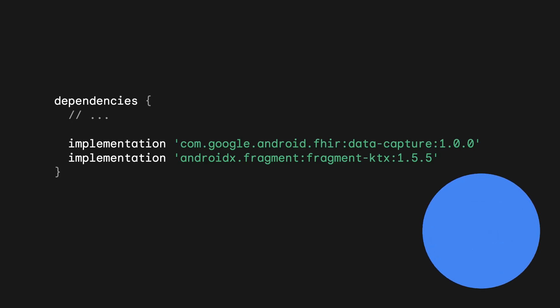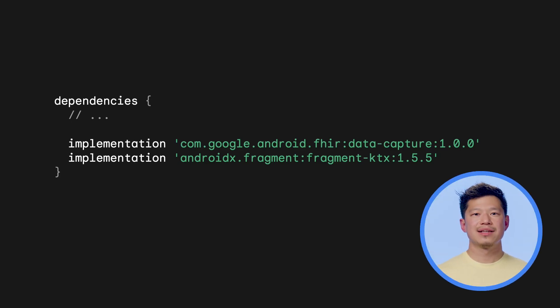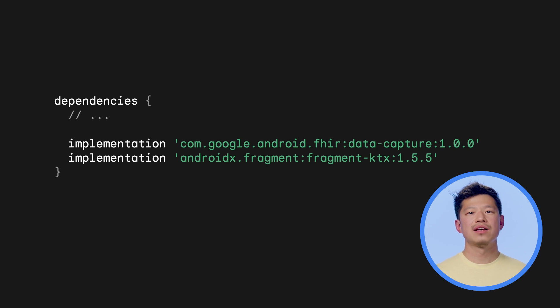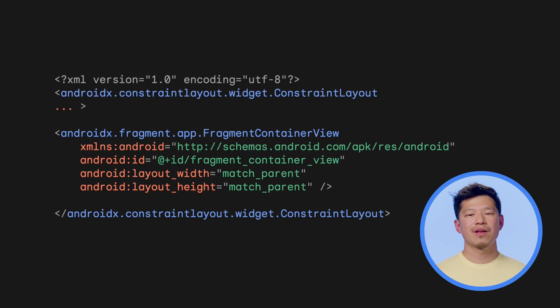Now it's time to take a look at how to use the SDC library. If you want to follow along in Android Studio, you can use the link below to download the zip file that includes the code of the sample app we're building here. First, include the SDC library dependency in your app's build file. After this, you can use the questionnaire fragment to display a form and capture answers. The questionnaire fragment is the main interface for your app to interact with the SDC library. Add the fragment container view to your layout file — this will be used as a placeholder to place the actual questionnaire fragment inside.